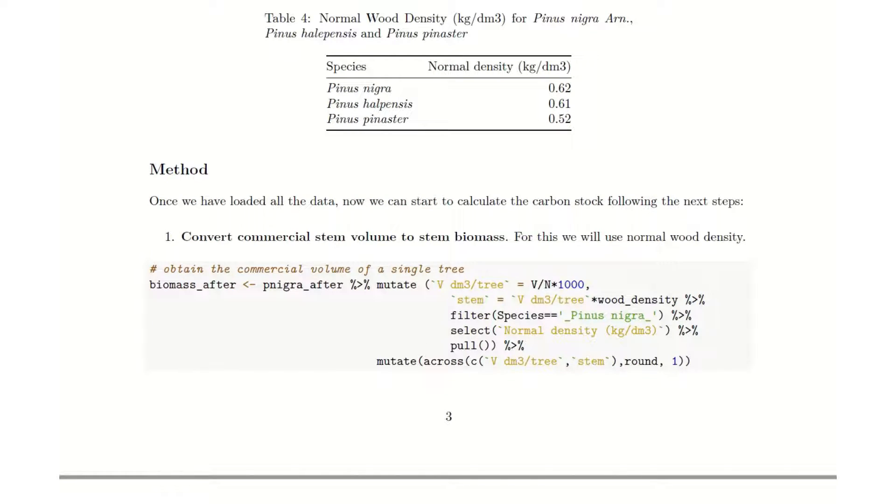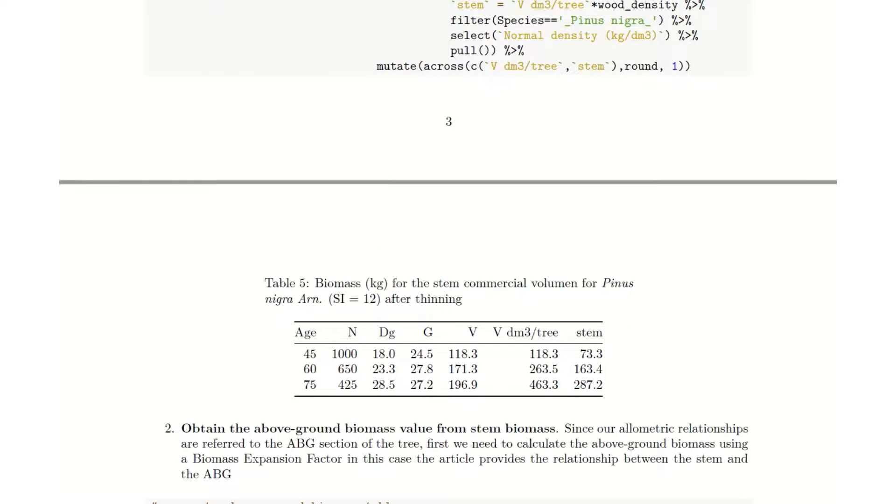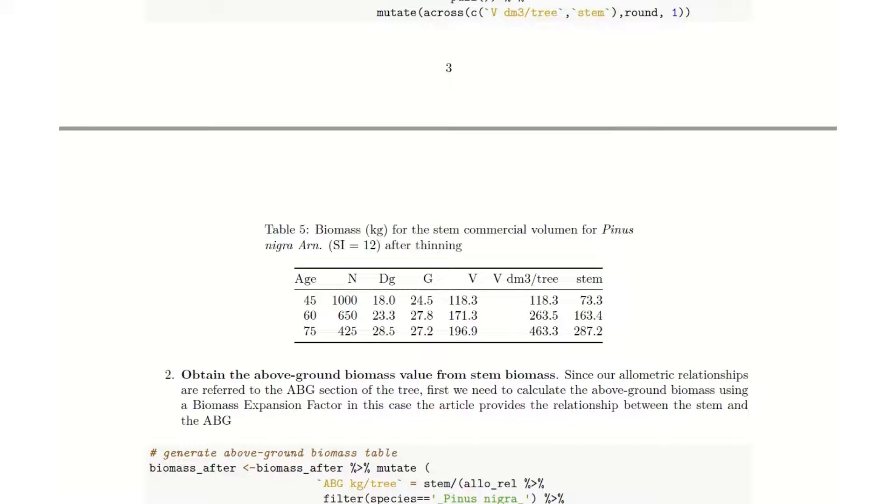In order to do so, we run this snippet code that will transform the volume that we have in the yield table to stem biomass. This is the output table that you will be given after running the code.